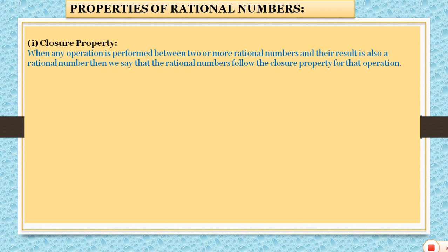The first property is closure property. Closure property states that when any operation is performed between two or more rational numbers and their result is a rational number, then we can say that the rational number follows closure property. When any operation — addition, subtraction, multiplication, or division — is performed between two rational numbers, if the result is in p by q form, then we say rational numbers are closed under that particular operation.